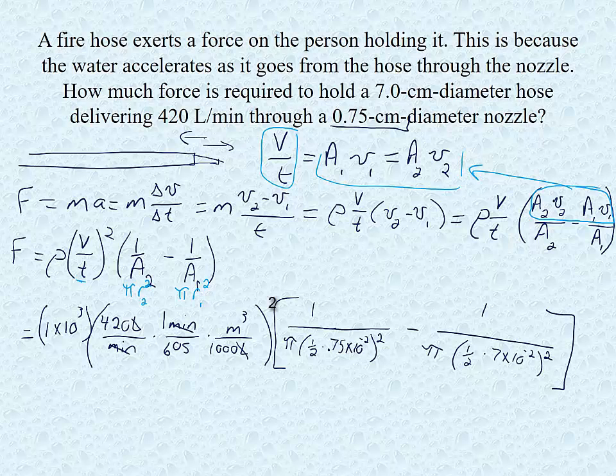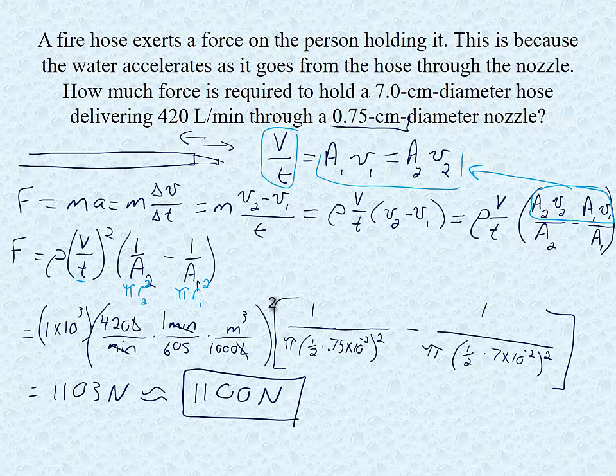And when we multiply that whole mess together, we end up with 1,103 newtons. Which based on the amount of sig figs we have up there, we can say that the force on the firefighter is approximately 1,100 newtons in order to keep the hose steady while they're fighting the fire.